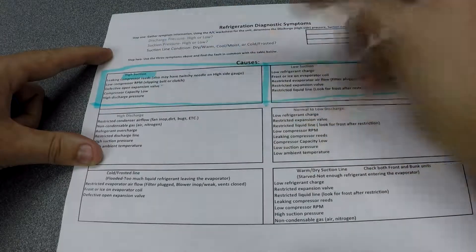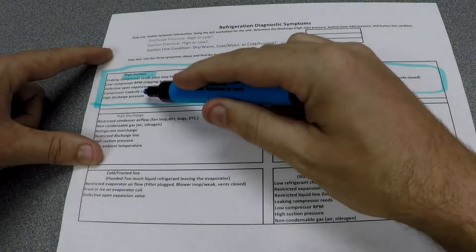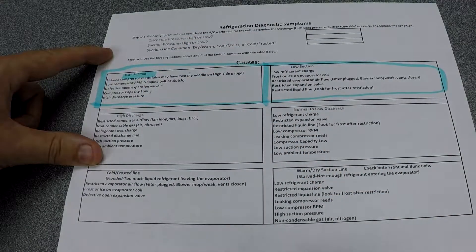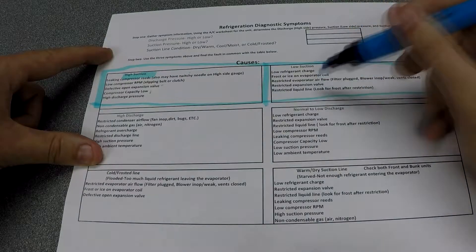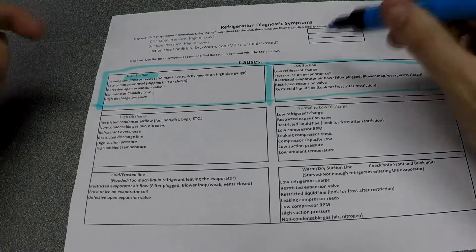High discharge pressure also causes high suction. Low suction pressures, these things you want to do them from top to bottom, so the most common problem will usually be at the top, so work from the top down.